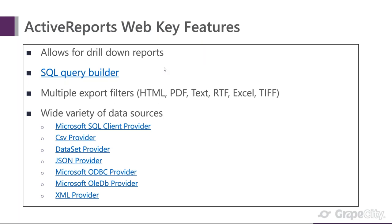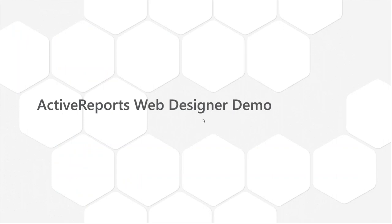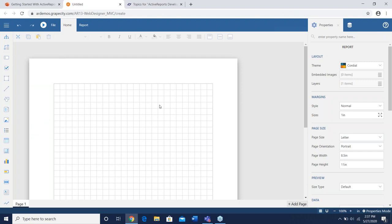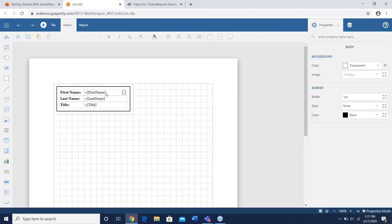There's also a wide variety of data sources supported: Microsoft SQL, client provider, CSV, JSON, XML, ODBC, and a few others. A lot of options for you. Let's get into the demo. Here we are — it's a blank report with nothing on it yet. I already have a few samples; we're going to open up the list report, which uses JSON data.